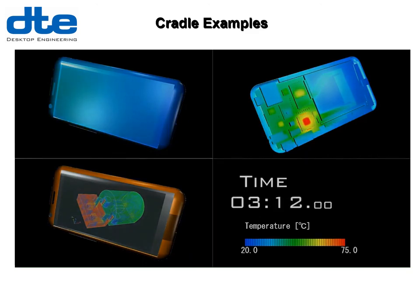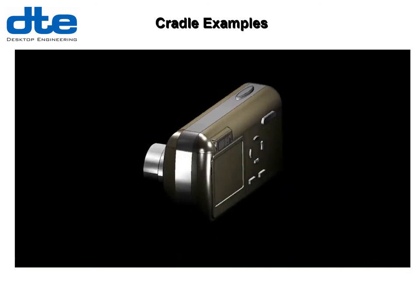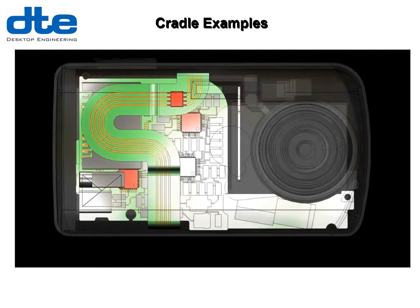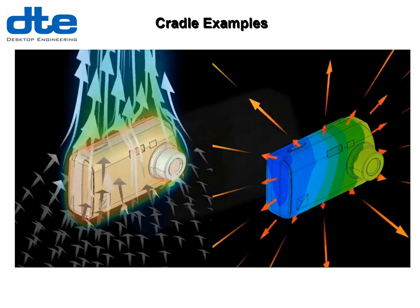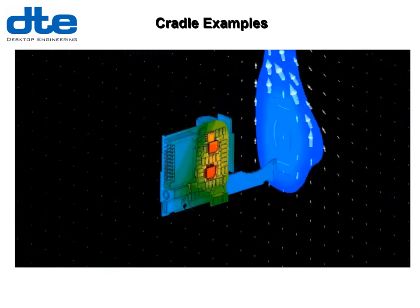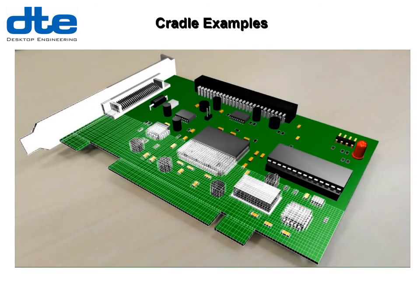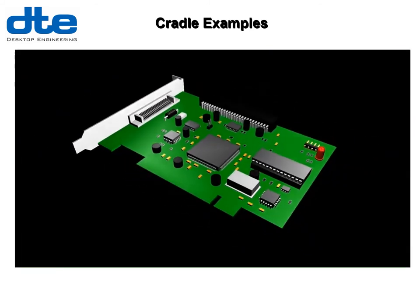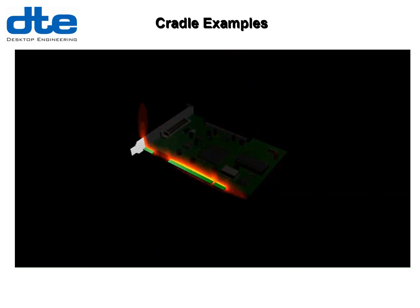Some Cradle CFD thermal examples: a portable device where packaging is getting ever denser and thermal is more of a consideration, a camera showing thermal radiation dissipated through radiation and convection, and a daughter card for a computer looking at how heat is lost by convection.